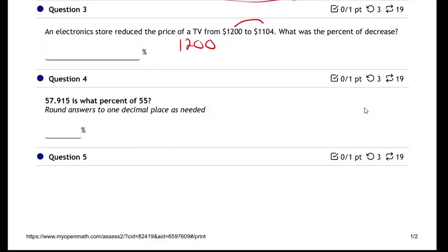went from $1200 to $1104, so we've got to subtract them. 96 decrease, just use your calculator there. We get a $96 decrease. The price dropped by $96.